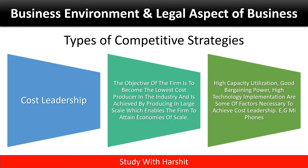Now let's discuss the first one: Cost Leadership. The objective of the firm is to become the lowest cost producer in the industry, and this is achieved by producing in large scale, which enables the firm to attain economies of scale. High capacity utilization, good bargaining power, and high technology implementation are some of the factors necessary to achieve cost leadership. For example,